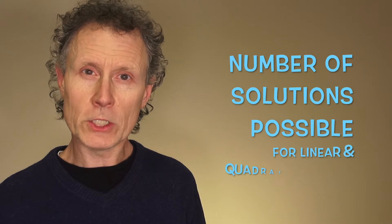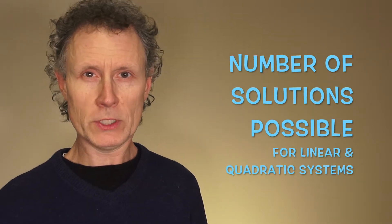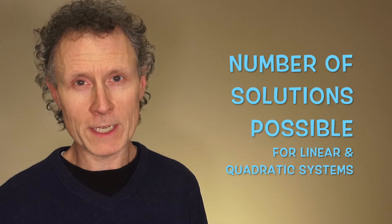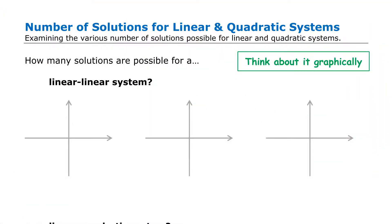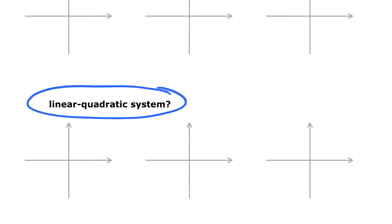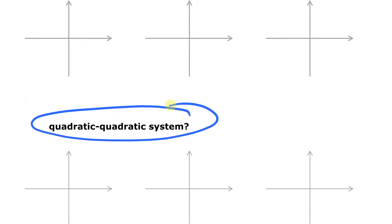In this video we are going to look at the number of possible solutions for systems that are linear-linear, linear-quadratic, and quadratic-quadratic. We're going to look at this graphically because it's the easiest way to see the different possibilities, and we are going to look at each type of system one at a time.